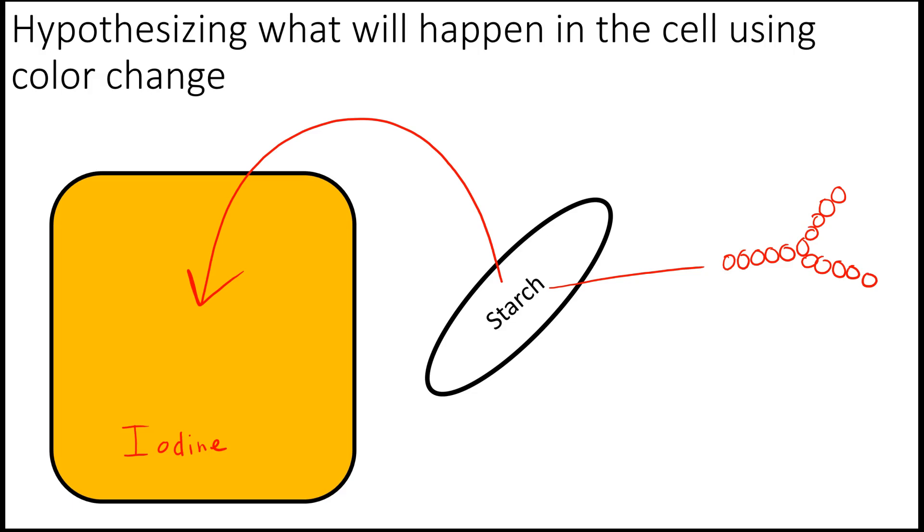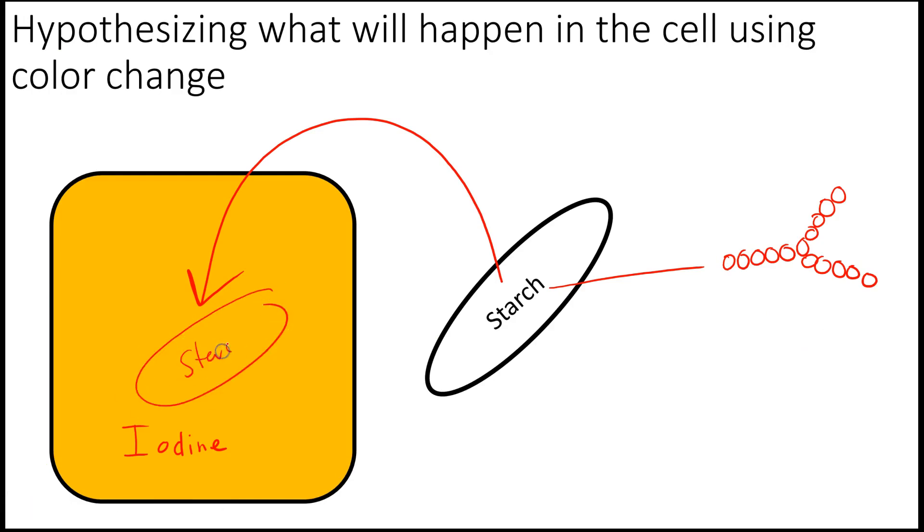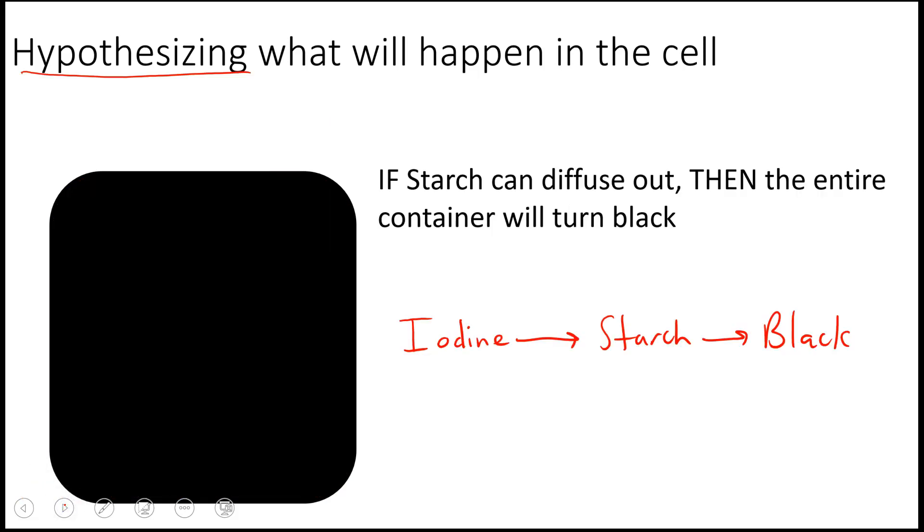But let's say you didn't understand that starch was a huge macromolecule not able to get out. What would you hypothesize would happen in the cell? You have to remember back to the iodine test. Iodine when interacting with starch results in a black color. So if this starch was able to get out of our container, it would diffuse out and interact with the iodine, leading the entire container to turn black. Practice making that hypothesis: if the starch can diffuse out, then the entire container will turn black.